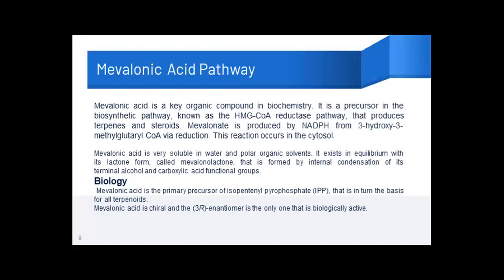Today's topic is the Mevalonic Acid Pathway, which is one of the important pathways required for the synthesis of terpenoids and steroids. The key starting step is when HMG-CoA reductase acts on a compound to convert it to mevalonic acid, which can then be converted into different steroids and terpenes. HMG stands for 3-hydroxy-3-methylglutaryl-coenzyme A reductase enzyme. Mevalonic acid is a key compound in the synthesis of terpenes and steroids.